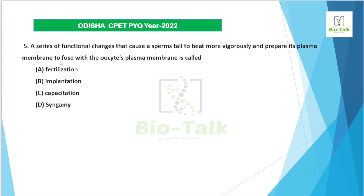The next question covers a series of functional changes that cause sperm to beat more vigorously with a stronger tail and become more active. This process is about sperm — they undergo a series of functional changes after being released and before fertilization, enabling them to become highly motile and penetrate the egg.